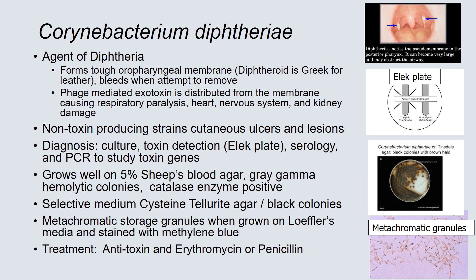Historically, we would have used cysteine tellurite agar — a selective and differential medium for C. diphtheriae on which the colonies turn black. We could also have used metachromatic storage granule staining, growing the suspect C. diphtheriae on Loeffler's egg-containing media and then staining with methylene blue. Treatment requires antitoxin to neutralize the toxin, and you can also treat with either erythromycin or penicillin.